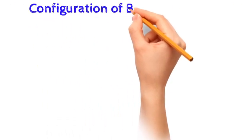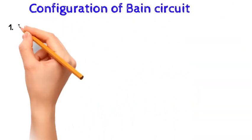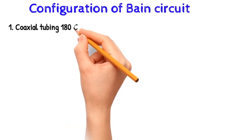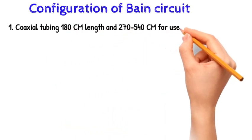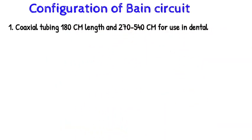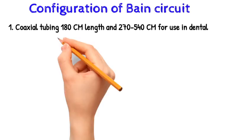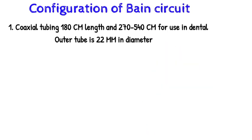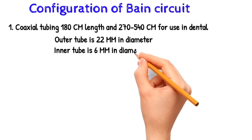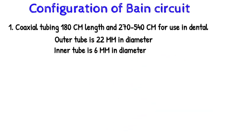Configuration of the Bain circuit: coaxial tubing is 180 cm in length, and 270 to 540 cm versions are used in dental, ophthalmic, and MRI suites. The outer tube is 22 mm in diameter and carries inspiratory and expiratory gases. The inner tube is 6 mm in diameter and carries inspiratory gases.